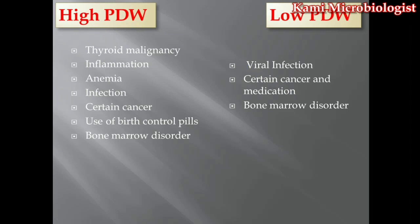Certain infections and diseases can cause low PDW. In viral infections like dengue, the dengue virus survives in platelet cells, performs its life cycle within them, and causes platelet disturbance resulting in low PDW. Certain cancers, antibiotics, and leukemia-type infections can also lower PDW. Bone marrow disorder can also cause low blood cell production, leading to low PDW.